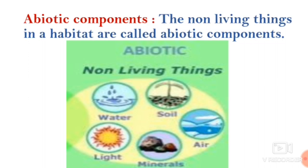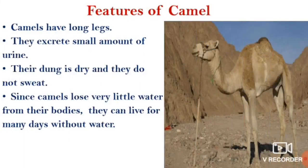Let us look at two different kinds of organisms from the desert and the sea. I will give two examples now — organisms living in the desert and the sea. First, camel.